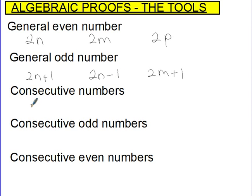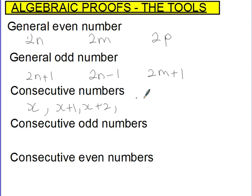Consecutive numbers. Basically if you have any number, let's say x, the next number after that — if you have a number and you want the consecutive number to it — you just add 1. The number consecutive to that is x plus 2, and prior to x you would have x minus 1. This is a way that you could write a set of consecutive numbers.